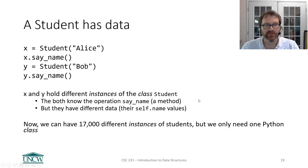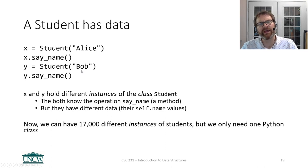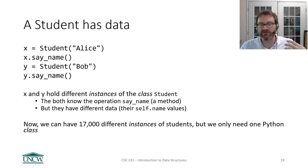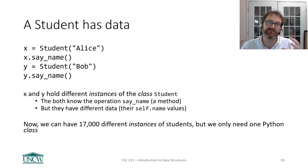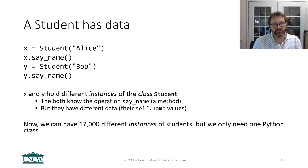Now the student has data. We can make multiple instances of students, all with different data. For example: 'x = Student("Alice")' and 'y = Student("Bob")'. Just like strings — 'x = "UNCW"' and 'y = "UNCG"' are two different instances of the string class with different data — but they know the same operations. Whether your student data is Alice or Bob, both know how to say the name.